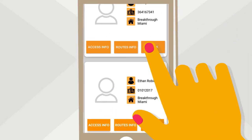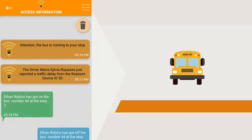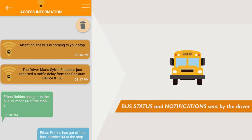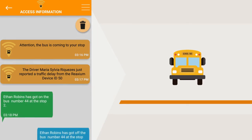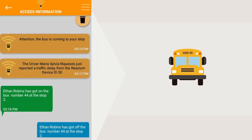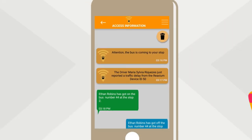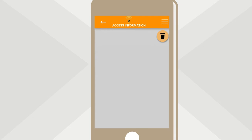The Access Info button displays time logs of your student getting on or off the bus, as well as all updates and notifications. The orange logs notify the bus status and any alarm sent by the driver. The green logs are notifications when the student gets on the bus. The blue logs notify when the student gets off the bus. Click the trash can to clear your feed.